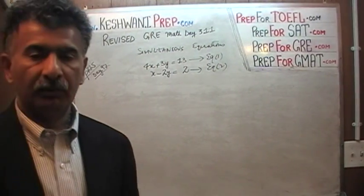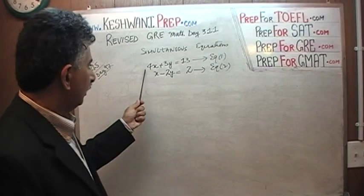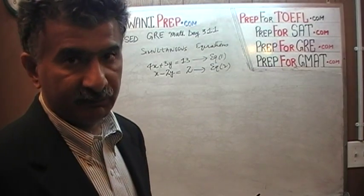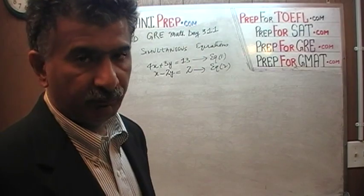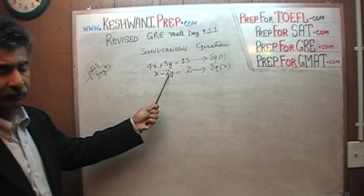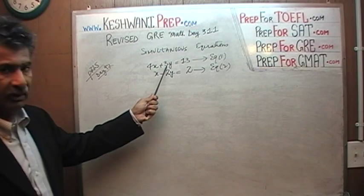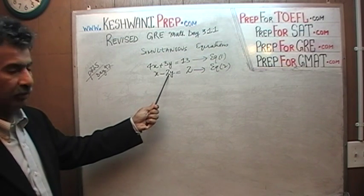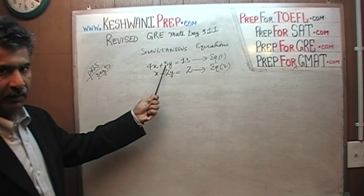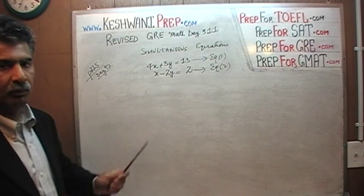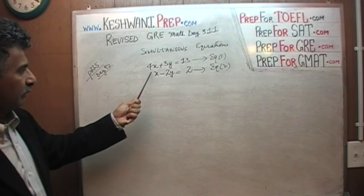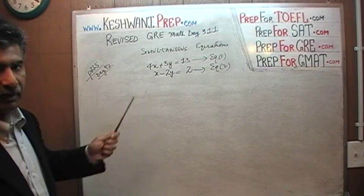There are a couple of methods we can use here. One is where we make the coefficient of a given variable the same. Another method is called the substitution method. Let's do the first method first. If you try to make the coefficient of y the same for both equations, we'd have to multiply the first equation by 2 and the second by 3 — twice the work. Instead, let's multiply the second equation by 4. That gives us a 4x, and we can subtract one from the other to get rid of x.